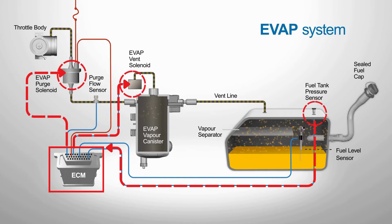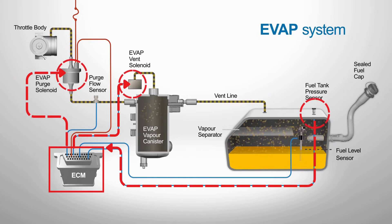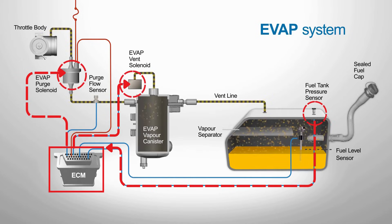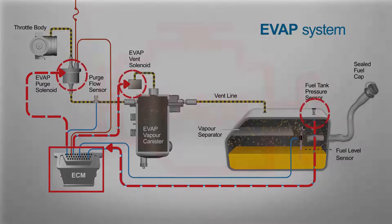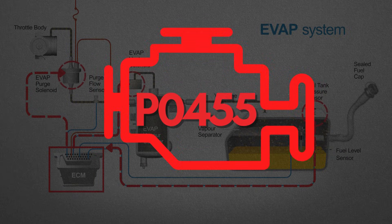If the ECM detects a drop in pressure or vacuum that exceeds acceptable limits, it assumes there's a leak somewhere in the EVAP system. Depending on the size of the leak, the ECM stores a specific code. A large leak is recorded as P0455.